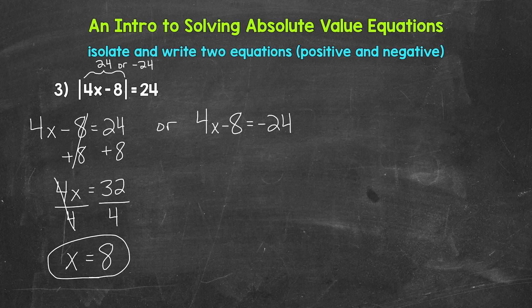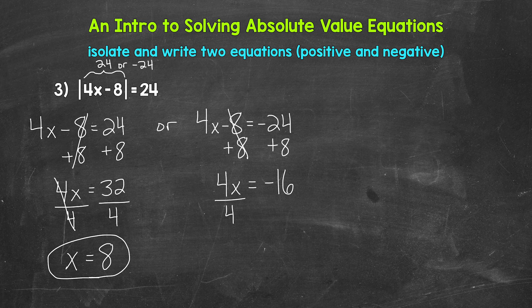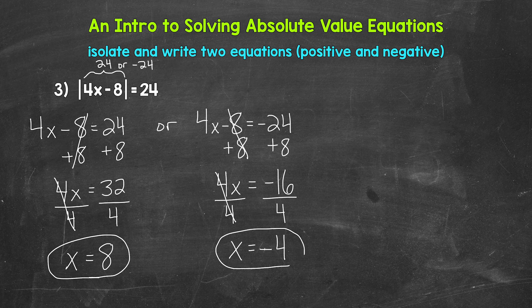Now let's solve four x minus eight equals negative 24. Add eight to both sides — these cancel. So four x equals negative 24 plus eight, which is negative 16. Divide both sides by four — the fours cancel. Negative 16 divided by four gives us negative four. So x equals negative four. Those are our two solutions.